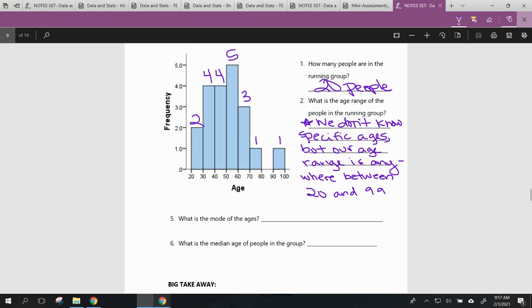Our next question is, what is the mode of the ages? Well, again, we can't get specific. We're going to have to answer this as the mode age range. And that's what we have to qualify on this one because we only know the range. The age range that has the most people in it is going to be this little nugget right here, which is 50 year olds - 50 to 59.